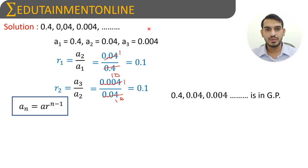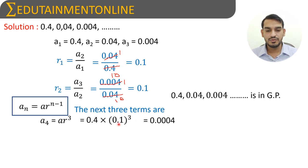We need to find the fourth, fifth, and sixth terms. The fourth term, a₄, equals a × r³, so 0.4 × 0.1³. If we expand this, 0.1³ equals 0.001 multiplied by 0.4, which equals 0.0004.